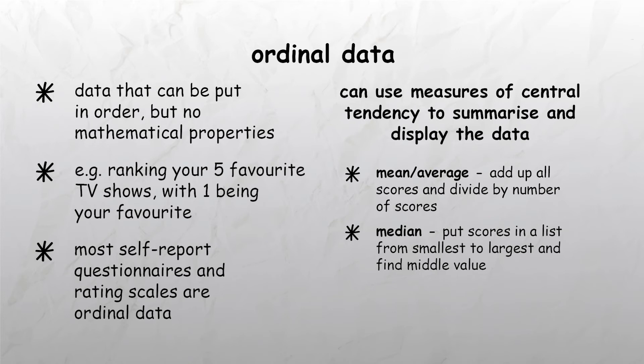The median, which is the middle value in a list of values. In order to calculate it, put all the scores in order from largest to smallest and find the value in the middle. And finally the mode, which is the value that has the most scores when all the values are grouped together.